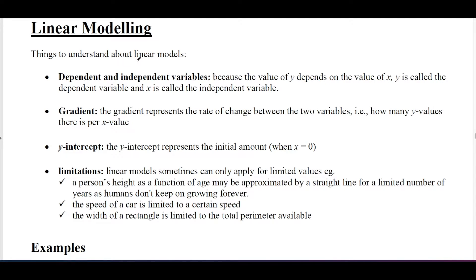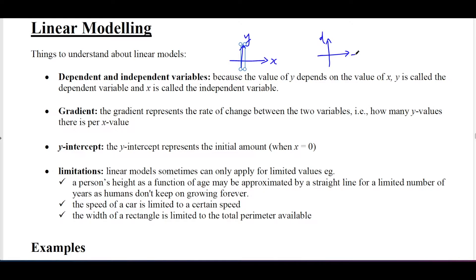Things to understand about linear models: there's a dependent and independent variable. If you draw an x and y axis, the y-axis is always the dependent variable and x is the independent variable — so y depends on x. For example, if you have a distance-time graph, the distance depends on time. So distance is the dependent variable and time is independent.